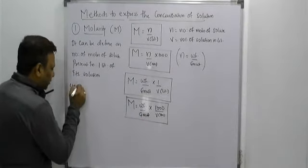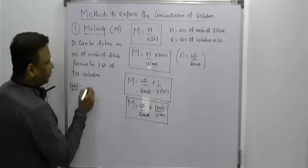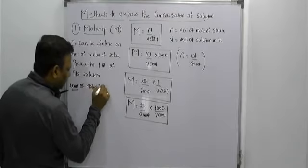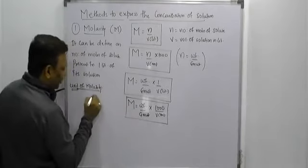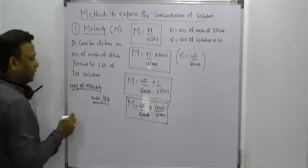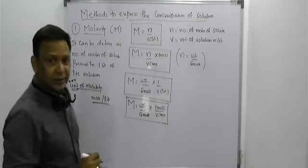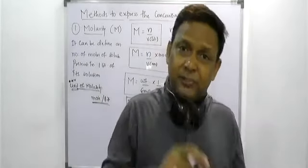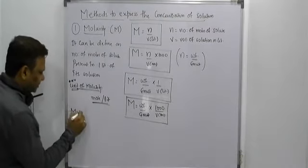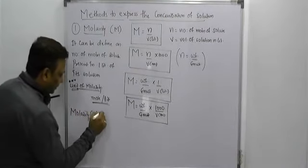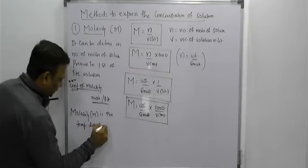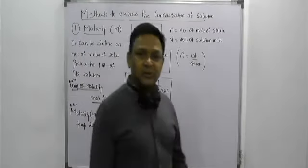They can also ask for the unit of molarity. Since n stands for moles and V stands for volume in liters, moles divided by liters gives mole per liter as the unit of molarity. Molarity is temperature dependent — capital M is temperature dependent.